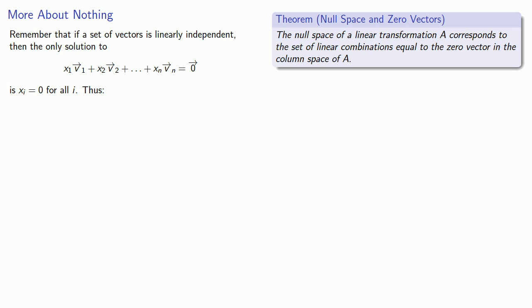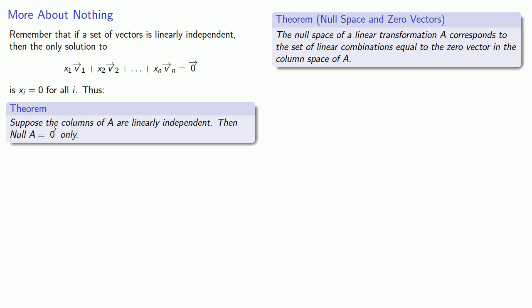And so what this means is if the columns of A are linearly independent, that is if the vectors forming the columns of A are a linearly independent set, then the null space of our transformation is going to be the zero vector only.